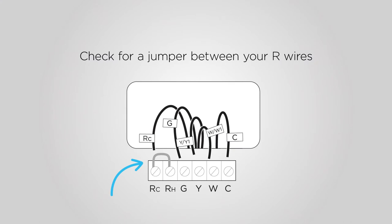Some thermostats will have a jumper wire between the RC, RH, or R wires. If you have a jumper, ignore it. Only label the wires that run from your wall into a terminal block.